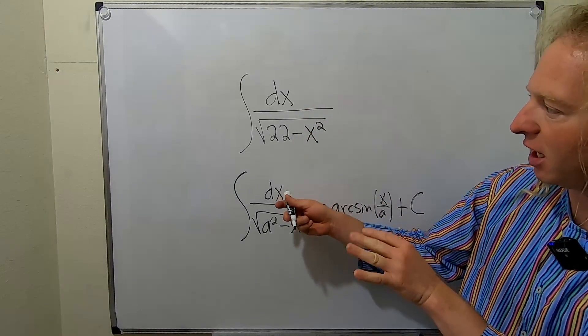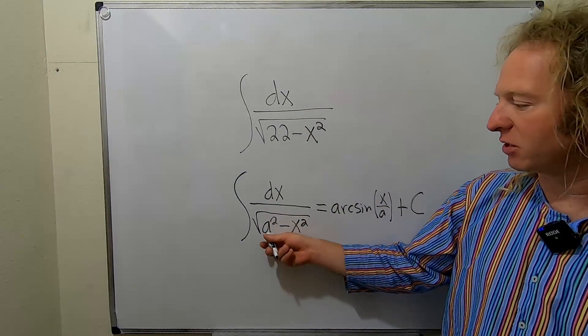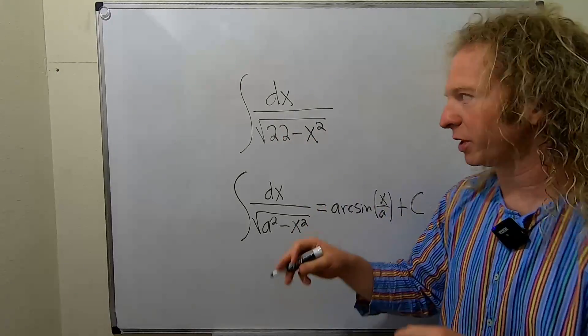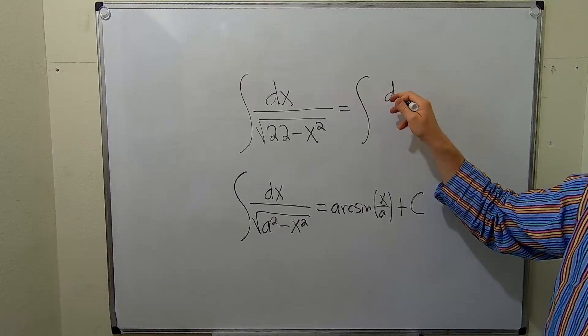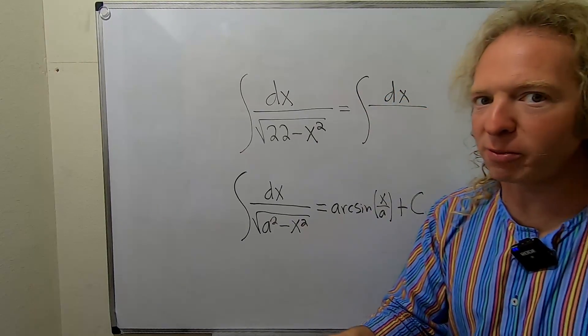So everything looks the same except maybe the a squared. So you want your a squared to be equal to 22. So the trick is to rewrite this integral in a way that lets you use this formula.